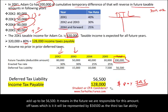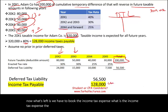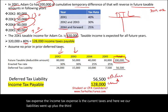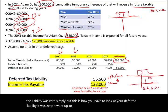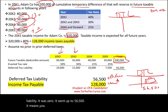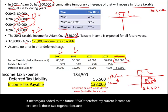What's left is to book the income tax expense. The income tax expense is the current taxes plus the deferred component. The deferred tax liability started at zero and went up to $56,500. So the current income tax expense is $128,000 plus $56,500, which equals $184,500.